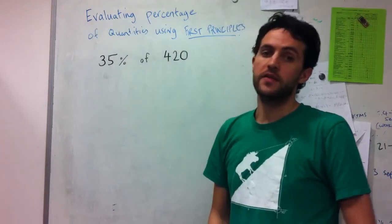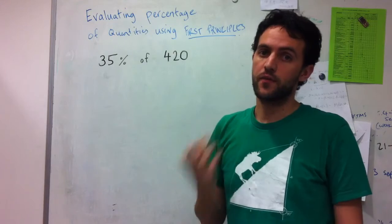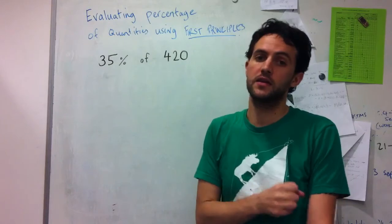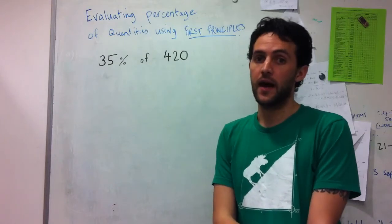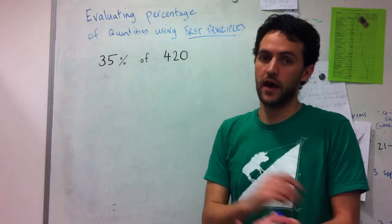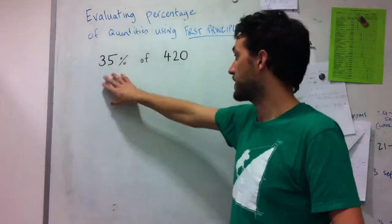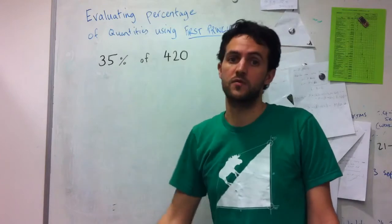So the idea of evaluating things with first principles is that we want to break down the sum into manageable blocks that we can essentially do in our head so that we avoid using a calculator, but also avoid doing a sum like this using long multiplication.